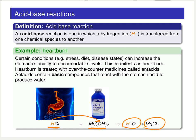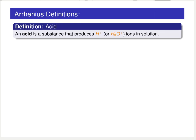You basically take that stomach acid and turn it into salt water, removing the negative feelings associated with heartburn. This example really hits at the core of what acid-base chemistry is all about. An acid is defined as any substance that produces H⁺ in solution. For this course we follow the Arrhenius definition: anything that contributes an H⁺ or H₃O⁺, as it's often found experimentally in solution, is classified as an acid.